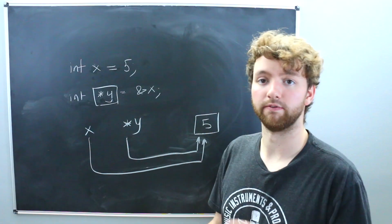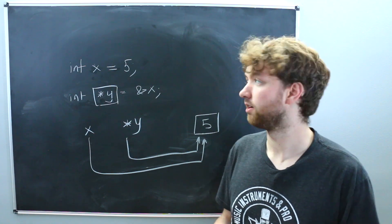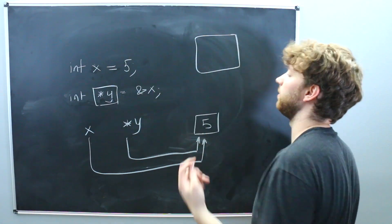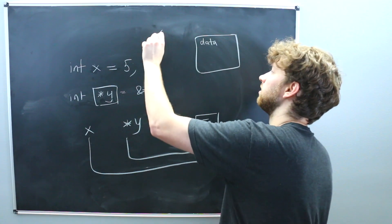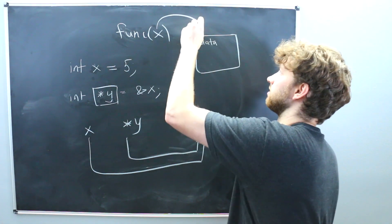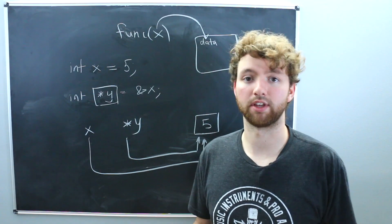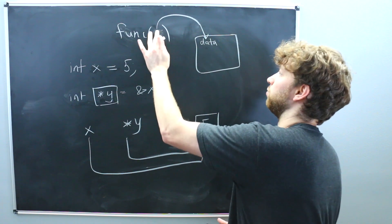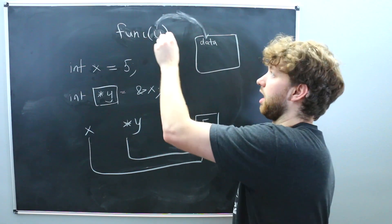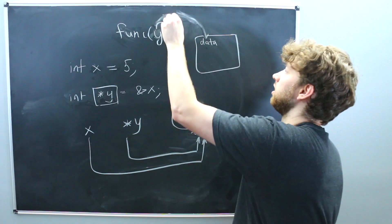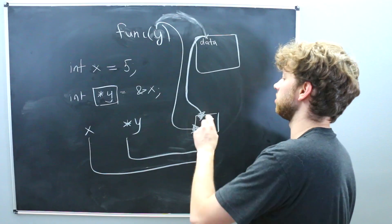This is commonly used for functions and passing data. So if I create some function and it has a parameter in there, we'll just call it data. Well, if you pass in x, by default, that x gets copied, the data of x gets copied into this data parameter. Well, if you're using pointers, you can actually have them refer to the same area of memory. So if instead you passed in y and the function took a pointer, well, then now the address is going to be copied into data and y is going to point to the same area of memory and data is going to point to the same area of memory.